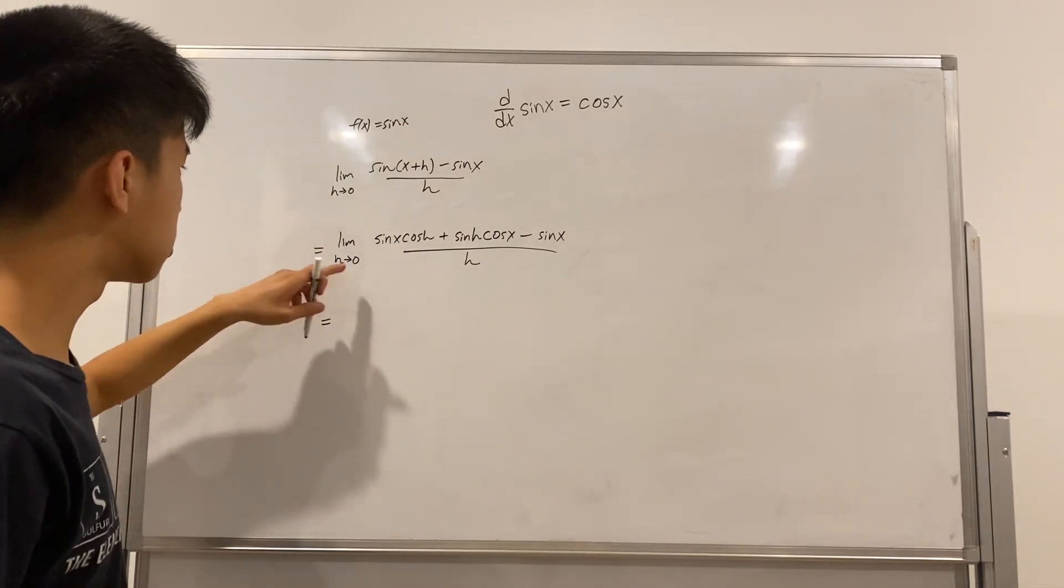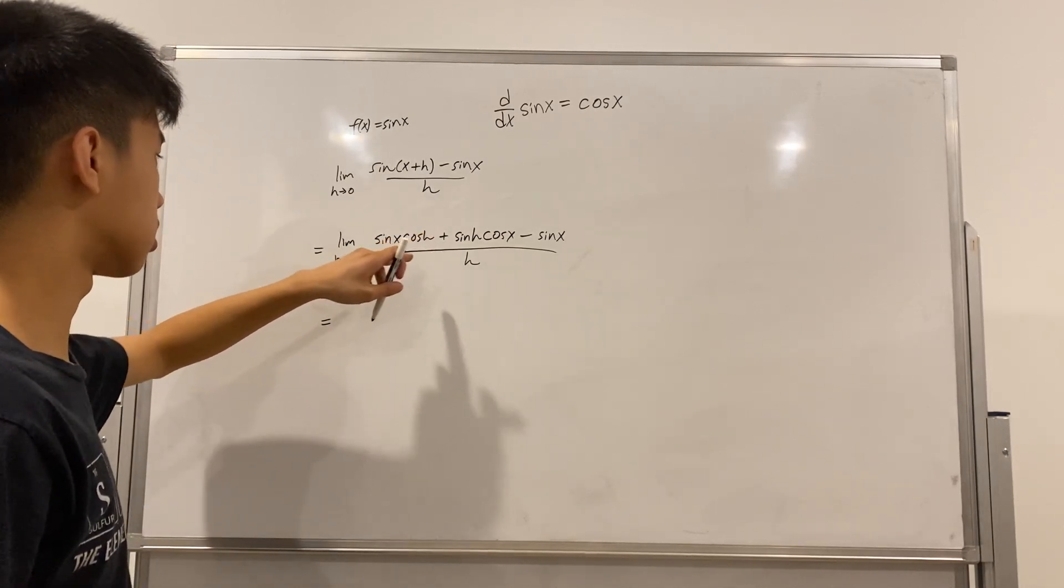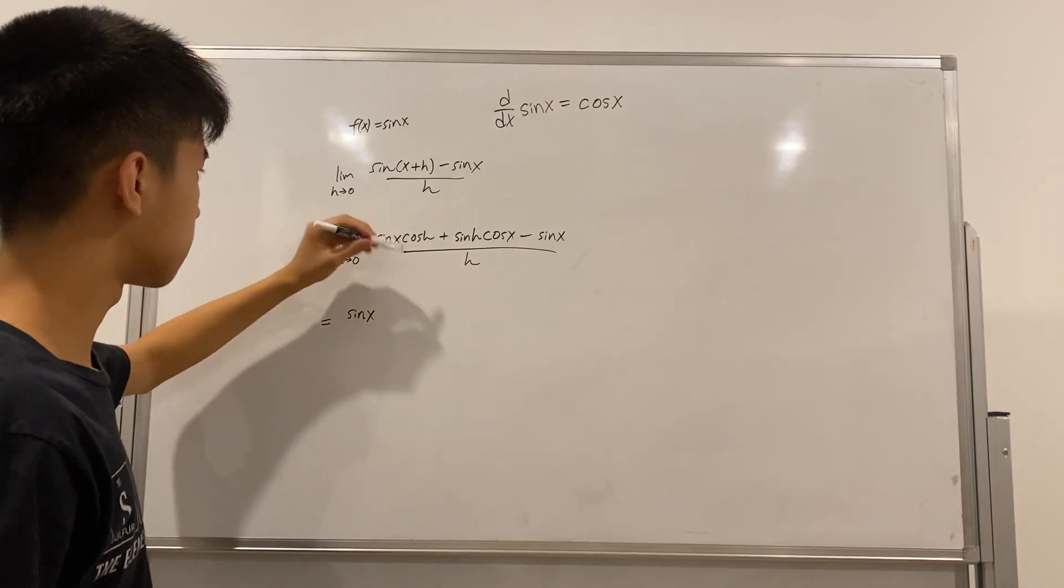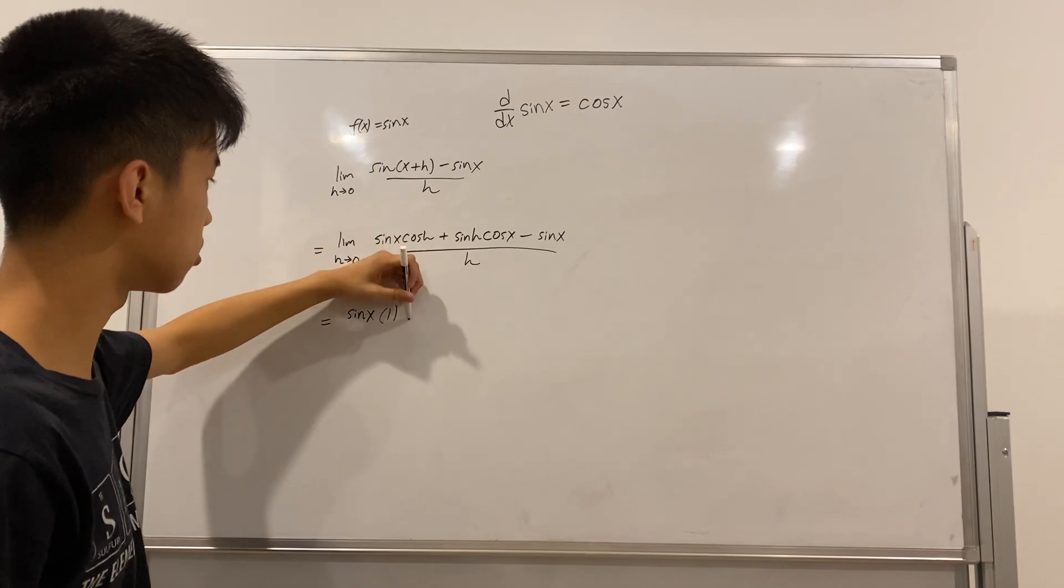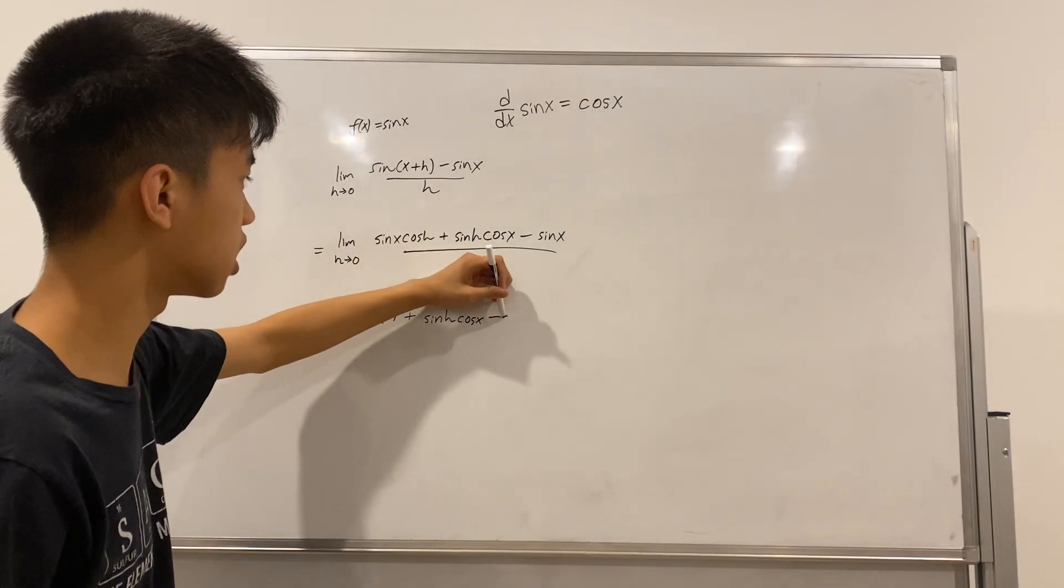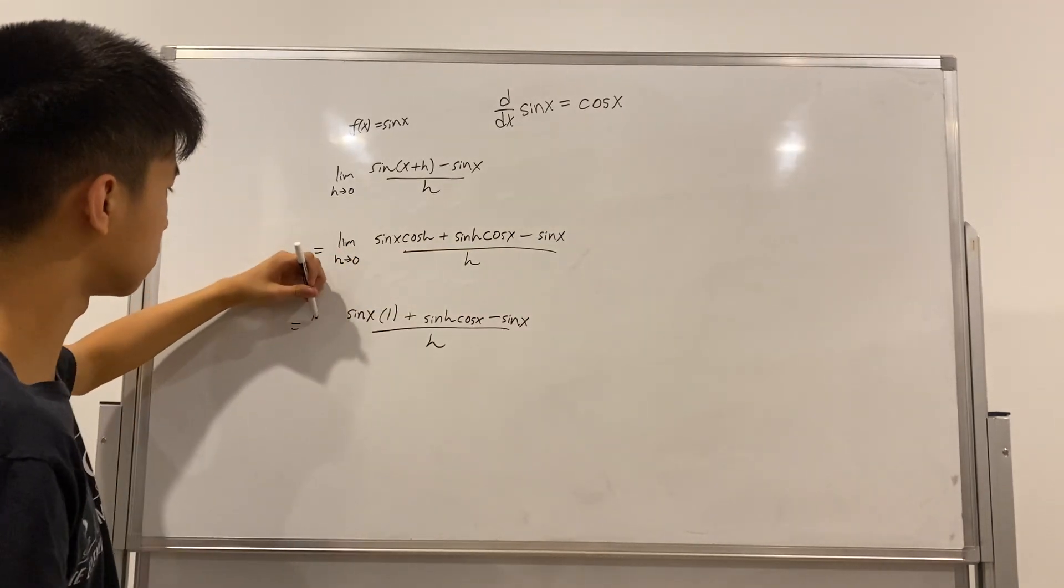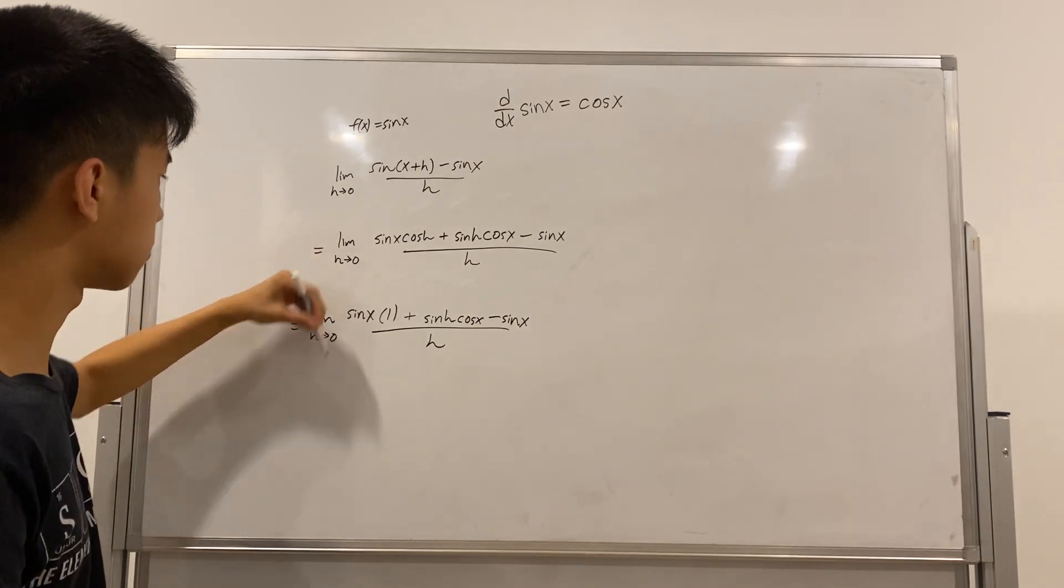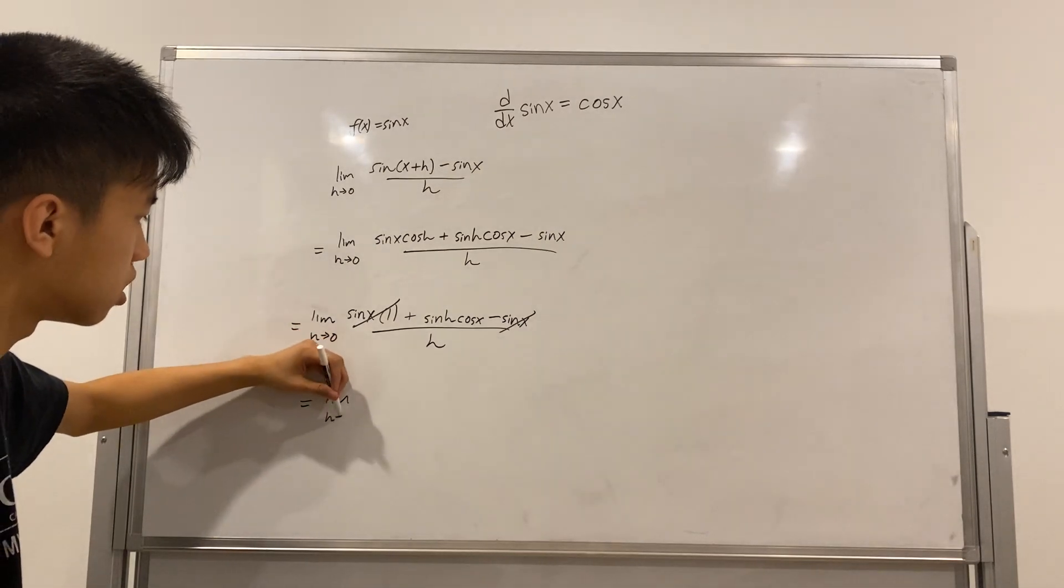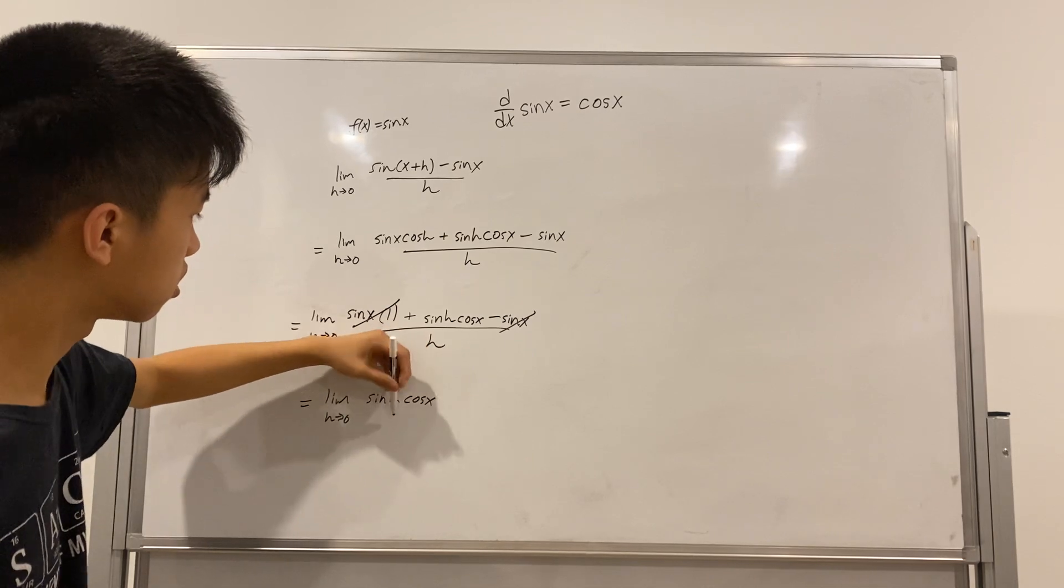So, you can directly substitute h into cosine h because that just yields 1. So, that's times 1 plus sine h cosine x minus sine x over h. Still have the limit here. Sine of x negative sine of x cancel out. So, we're just left with this limit, sine h cosine x over h.